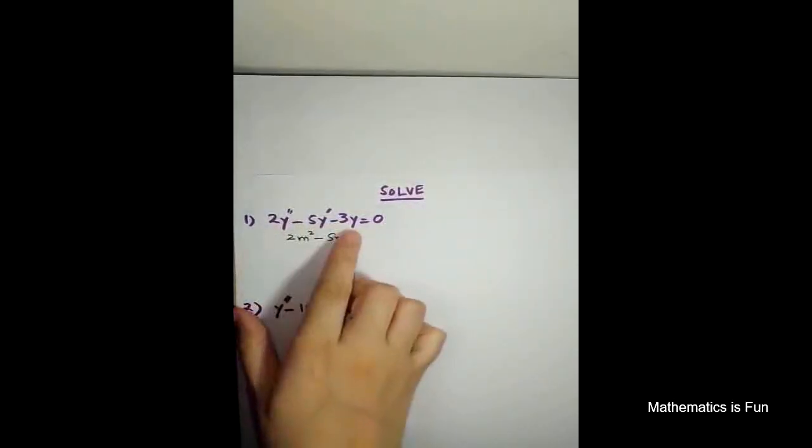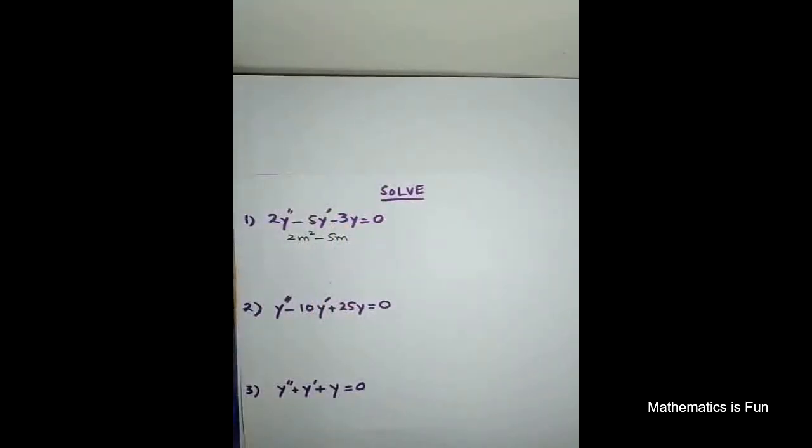Constants are 2, minus 5, and minus 3. A2 is 2, A1 is minus 5, and A0 is minus 3. So with this, we can apply this auxiliary equation or characteristic equation to get our solution, to get our complementary general solution.